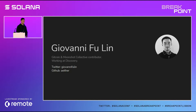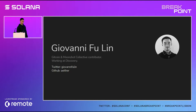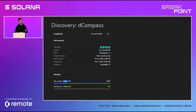A quick introduction to myself. I'm Giovanni Fuling and I come from Italy. I'm an open source contributor to Moonshot Collective and Gitcoin. Right now I'm working on Discovery. In Discovery, we are going to launch our first product, which is the Compass. The Compass will be a platform to welcome new users to web3.